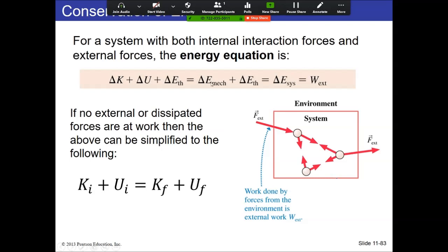We're going to simplify this down. For the first two examples, we're not going to consider any E-thermal and we're not going to consider any external work being done. So really what's going on is delta K plus delta U equals zero. You can write that in the form where you characterize the kinetic and potential energy of the system initially, and then at some later time. If it's truly an isolated system with no dissipative forces, these quantities are equal to each other.